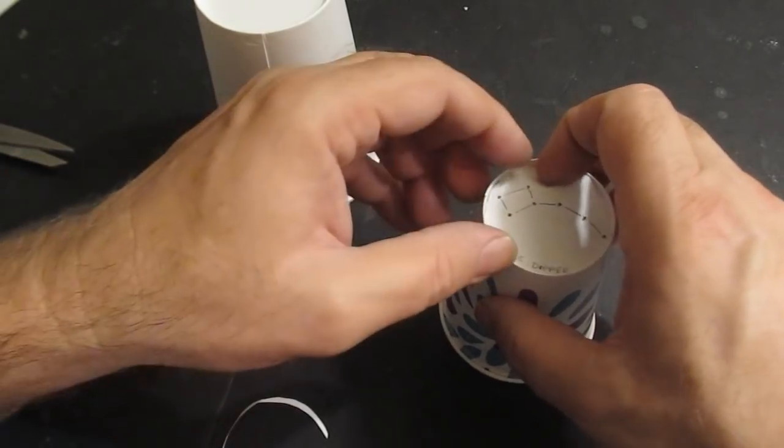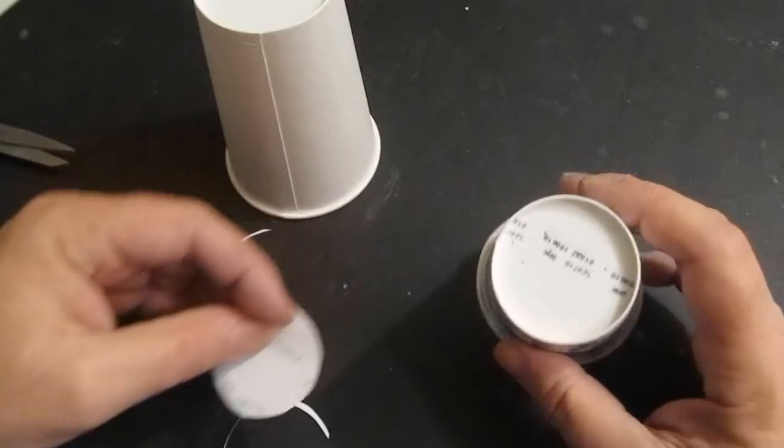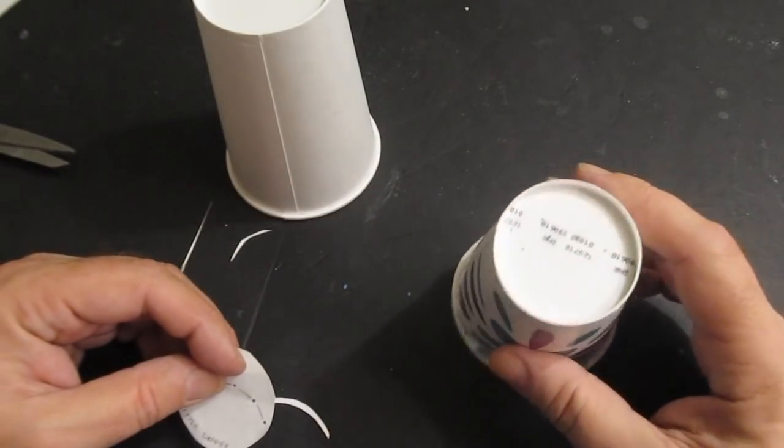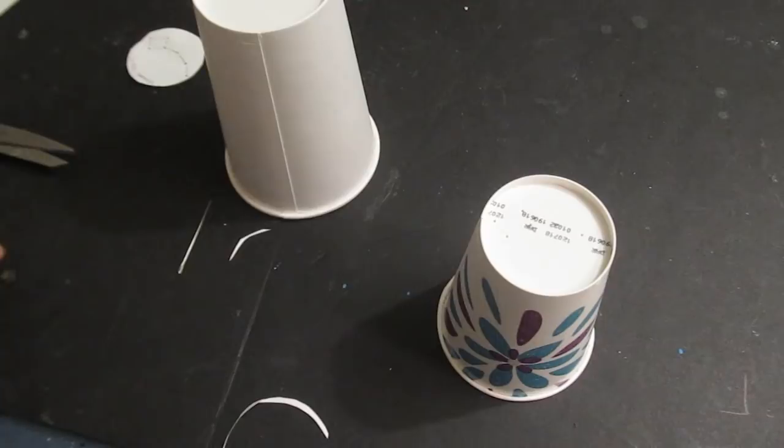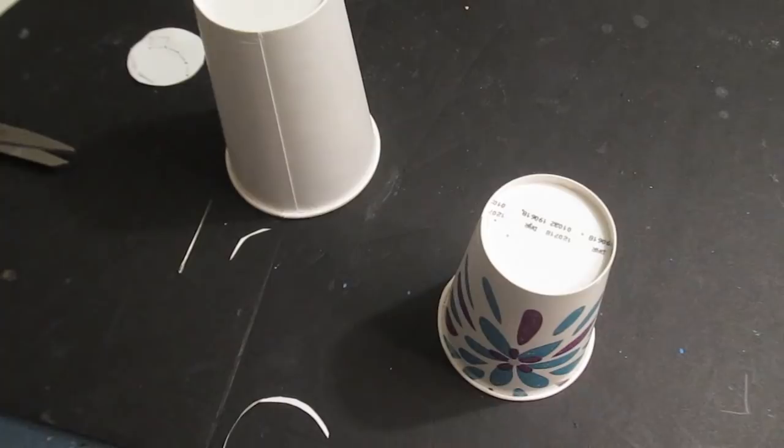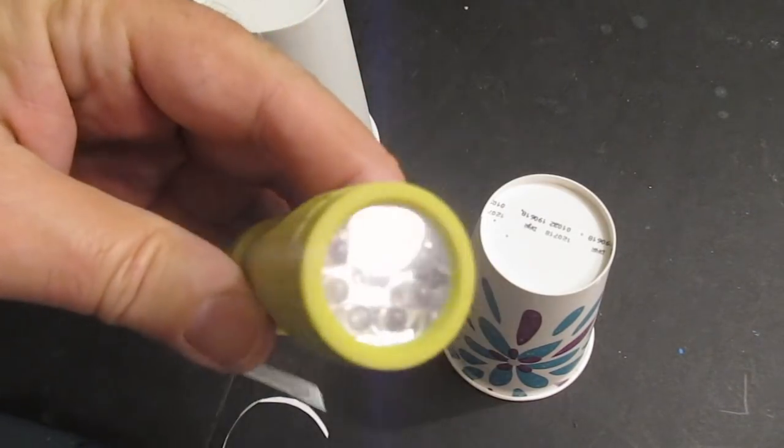So now there it is. Ursa Minor. The Little Dipper. Now you can be done with this project. You can make a bunch of cups. Just do all the different constellations that I have for you. Or make some of your own.